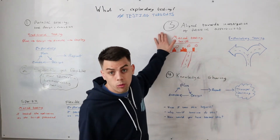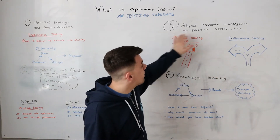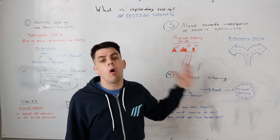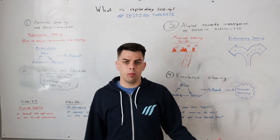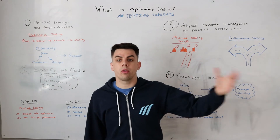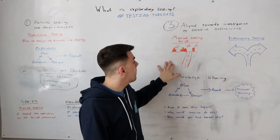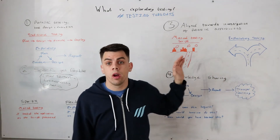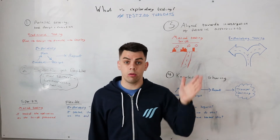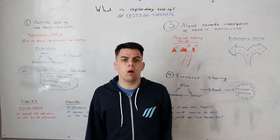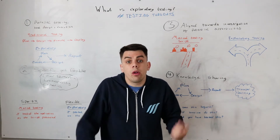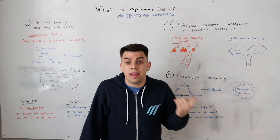The third principle of exploratory testing is that it's aligned towards the investigation of potential opportunities. To give a real-life example: if my end goal was to get to the nearest city, however I'm taking a manual testing approach and the manual testing script says I can only use motorways to get to the city — that's going to be a very narrow approach, and it would probably only be able to take one motorway to get to my destination.